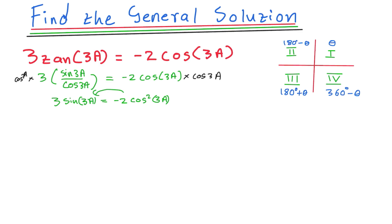I transpose the -2cos²(3a) to the other side — it becomes positive — giving me 3sin(3a) + 2cos²(3a) = 0. Now I have both sine and cos squared. I can't change sine, but I can change cos squared using the identity: cos²(3a) = 1 - sin²(3a).